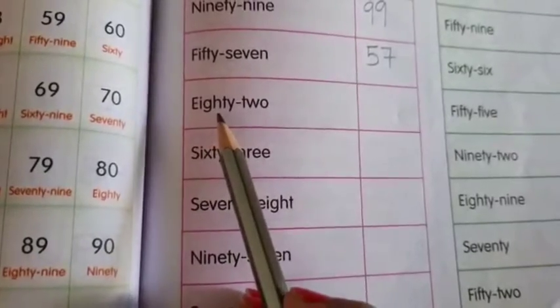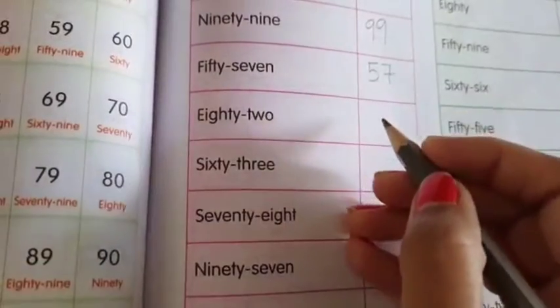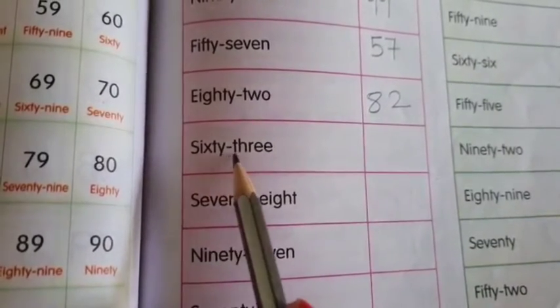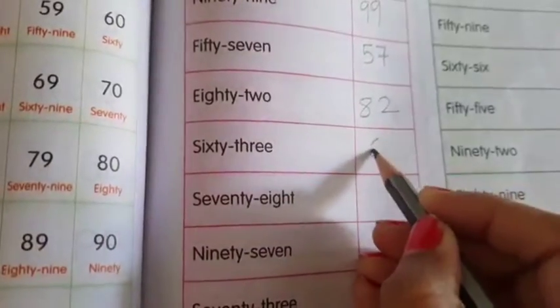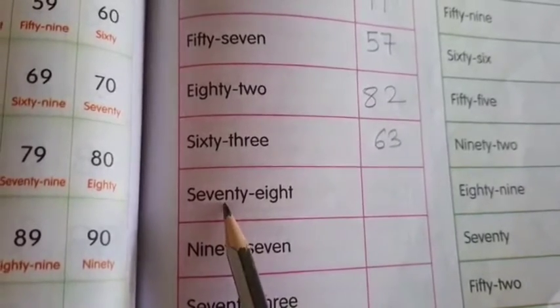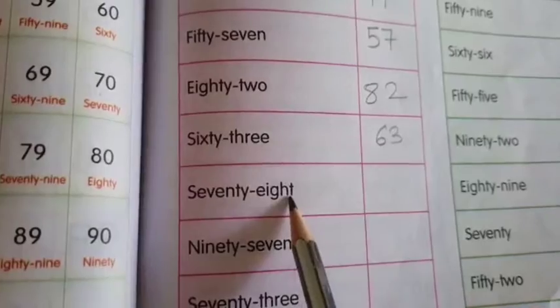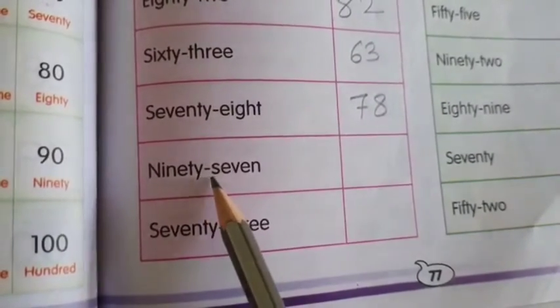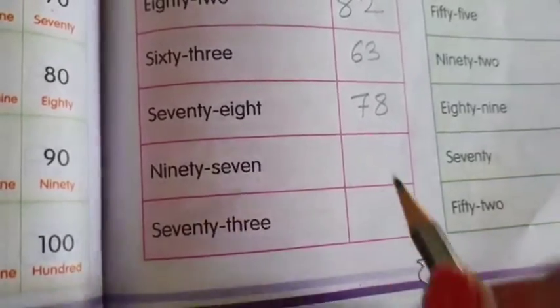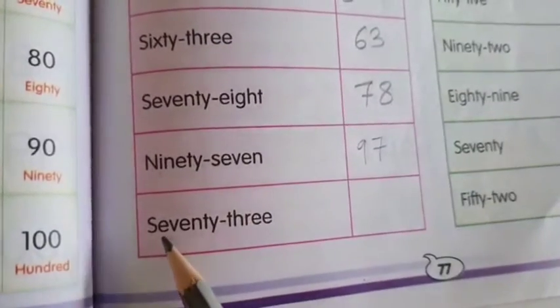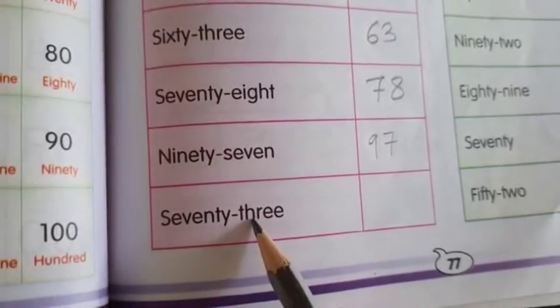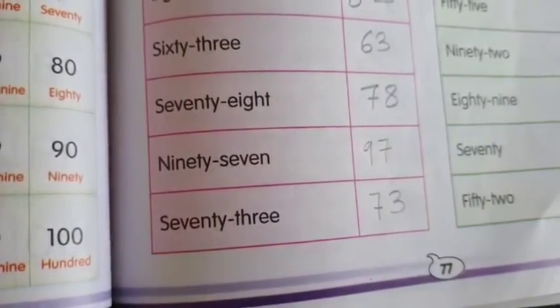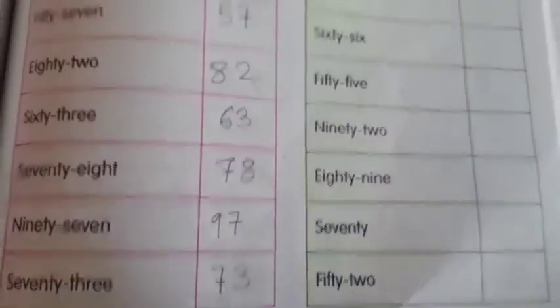EIGHTY 80 TWO 2, 82. SIXTY 60 THREE 3, 63. SEVENTY 70 EIGHT 8, 78. NINETY 90 SEVEN 7, 97. SEVENTY 70 THREE 3, 73.